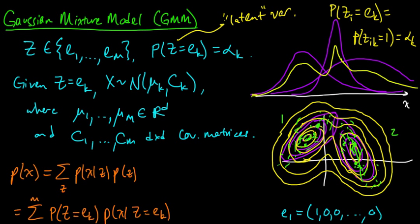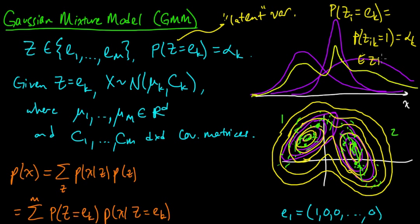Welcome back. We're doing the EM algorithm for the Gaussian mixture model, and we're getting close. We were computing the expected value of Z_ik, and we checked back with our model and found that the probability that Z_ik equals 1 is α_k. Z_ik is the k-th coordinate of the vector Z_i — it's a Bernoulli random variable that only takes values 0 and 1. So the expected value of Z_ik equals α_k.